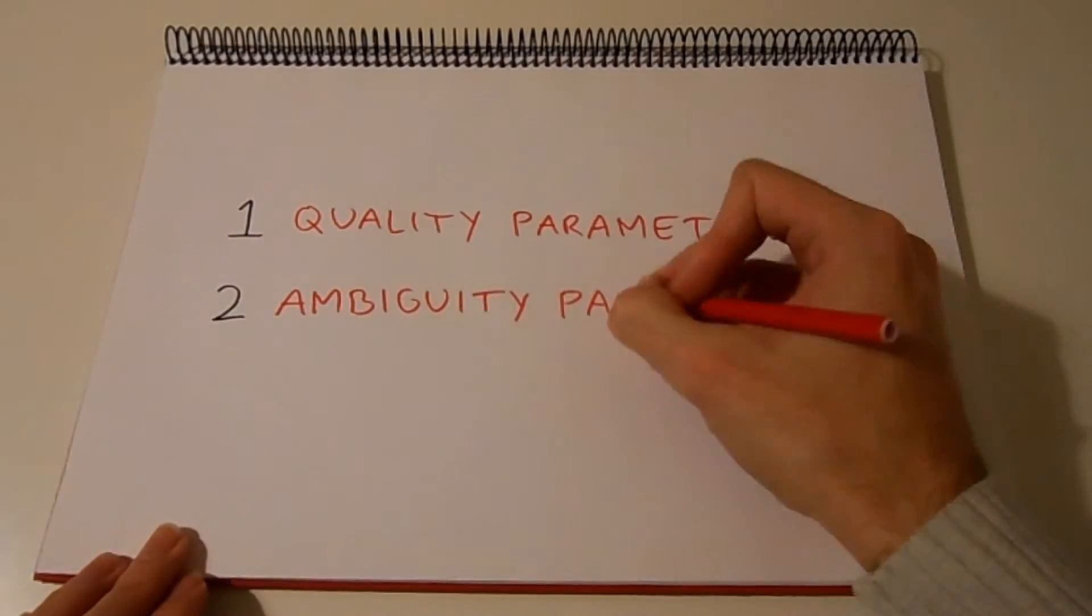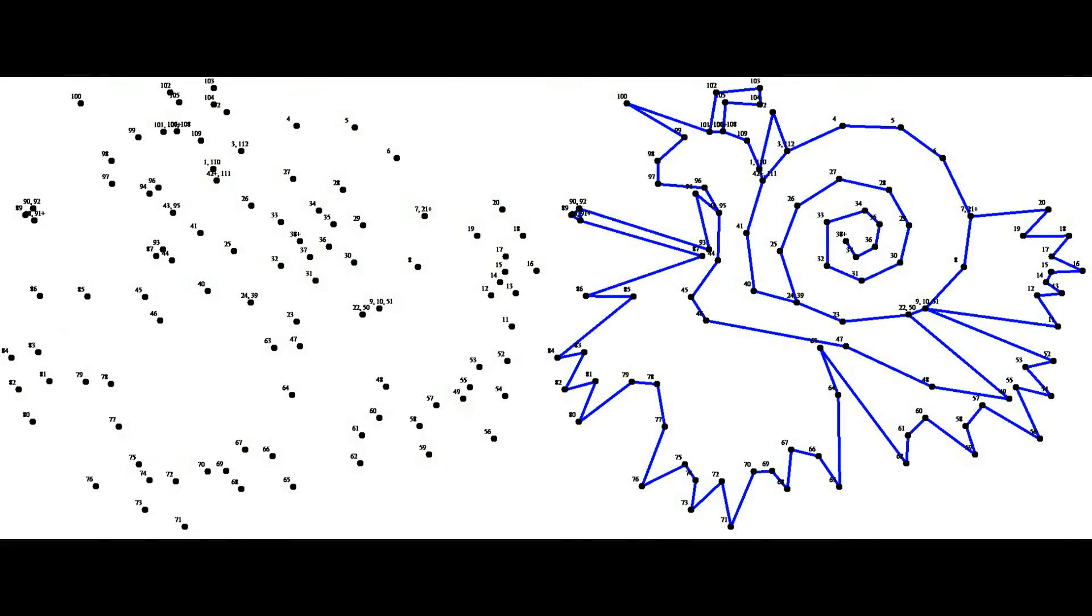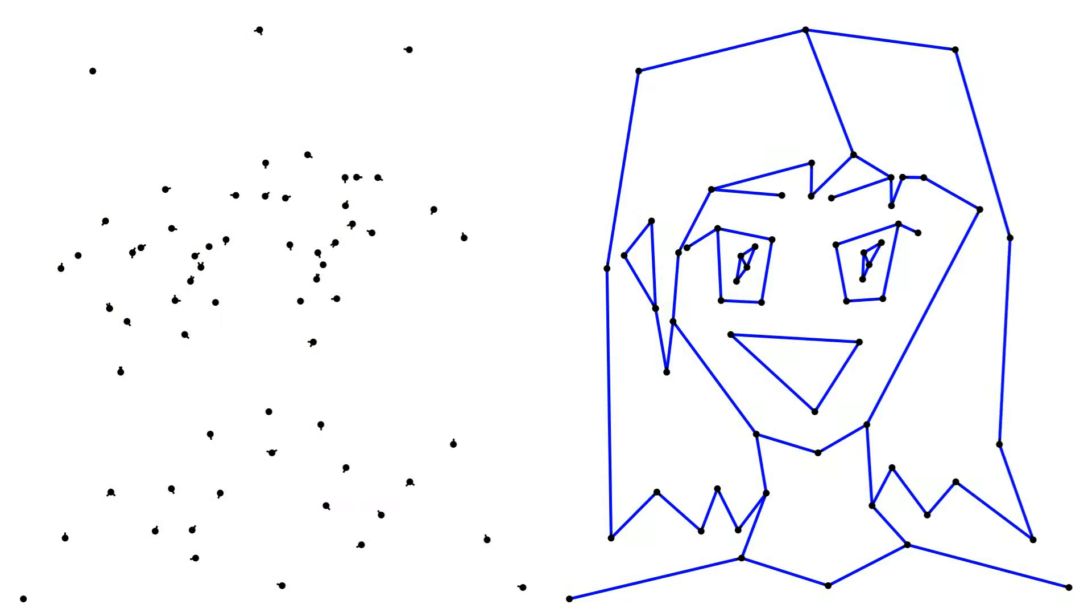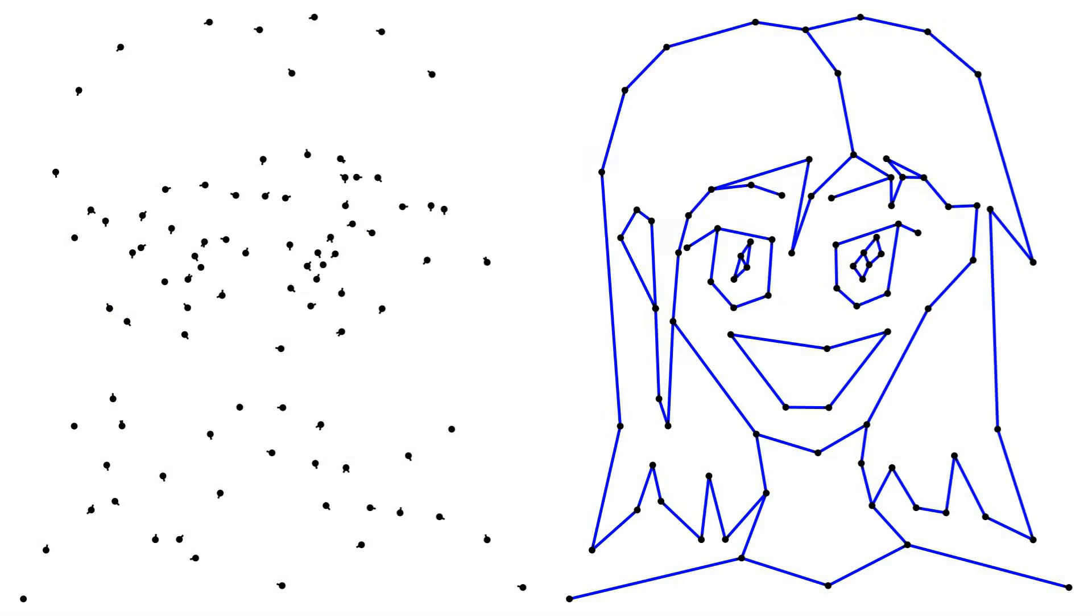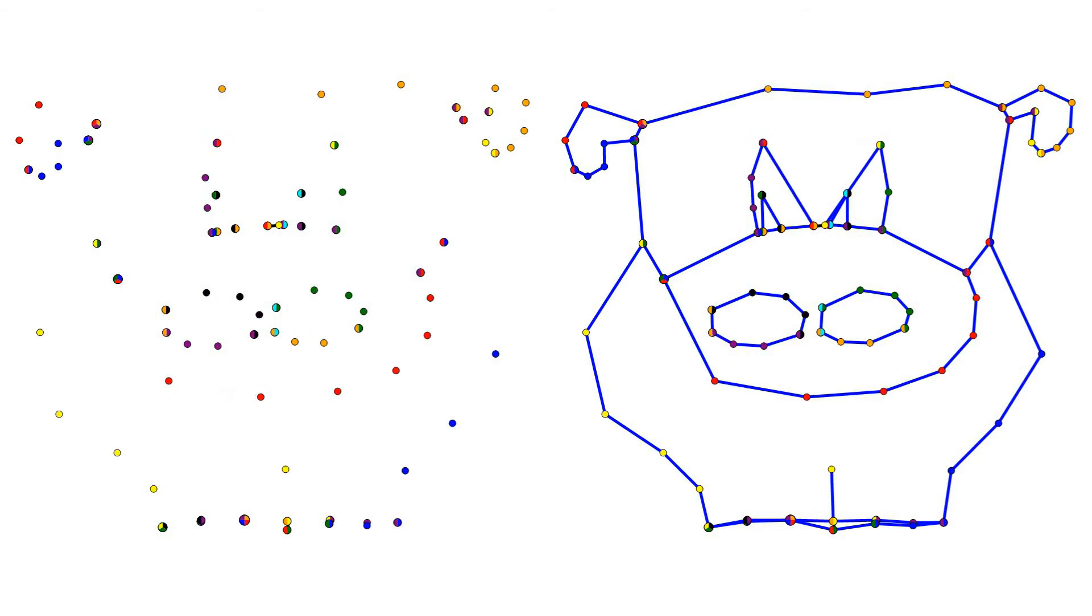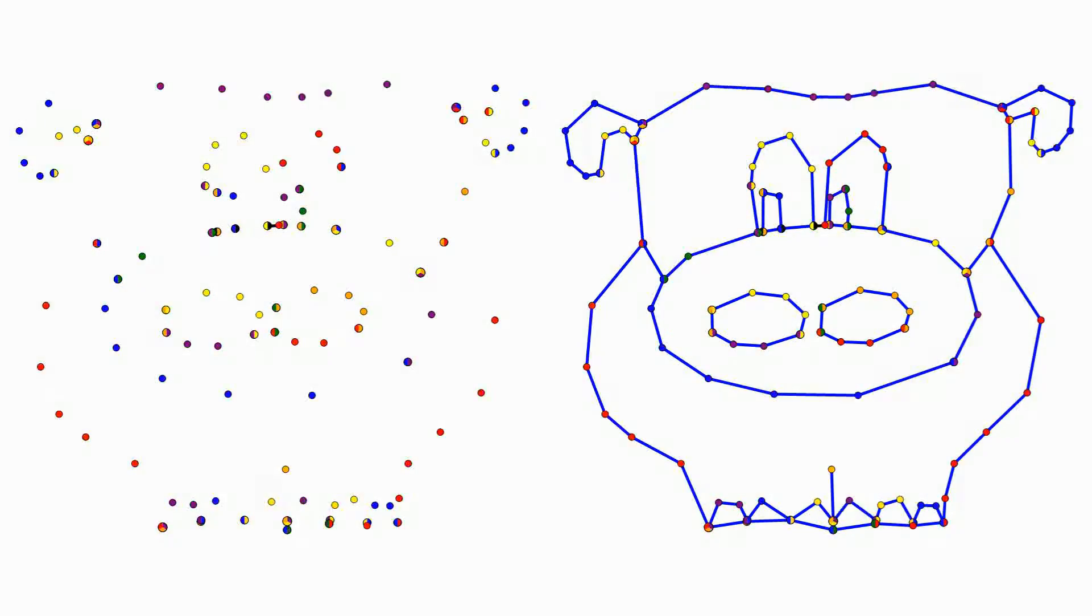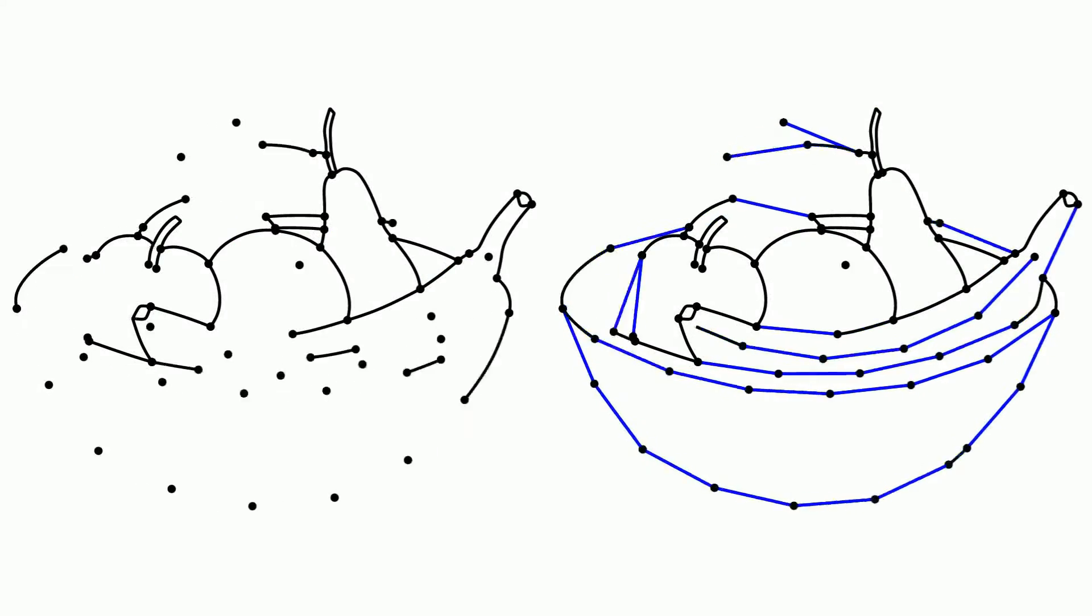The generation process is controlled by two parameters, a quality parameter and an ambiguity parameter. The quality parameter governs how much the result looks like the original drawing. There's a trade-off here, better quality results in nicer pictures but needs more points, which also means that the end result is more likely to be already visible in the puzzle.